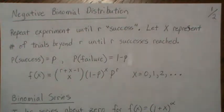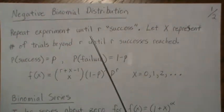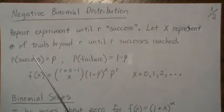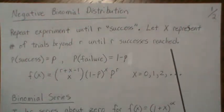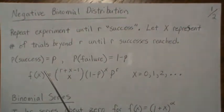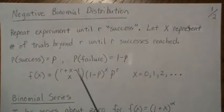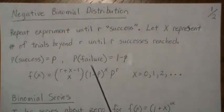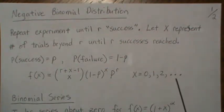In this video we're going to explore why they call it a negative binomial distribution. First let's illustrate what a negative binomial distribution represents. It's if we were to repeat an experiment until r successes, and let X represent the number of trials beyond r until r successes are reached. We're going to let P be the probability of success and 1 minus P be the probability of failure.